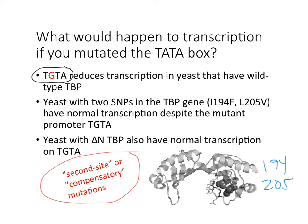Then another interesting thing was discovered: if you remove the N-terminal portion of the TBP protein — the whole start of the protein — then TBP loses its specificity for TATA. This means that not only are amino acids 194 and 205 important for recognizing a DNA sequence, but so is the N-terminal domain. If you delete the N-terminus (delta N), TBP will bind acceptably to TGTA. So both point mutations in the stirrup and the presence or absence of the N-terminus dictate whether or not this protein will bind and initiate transcription.